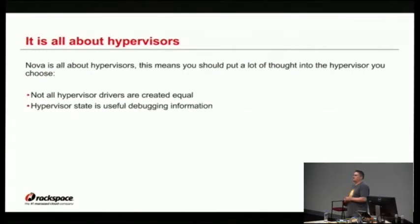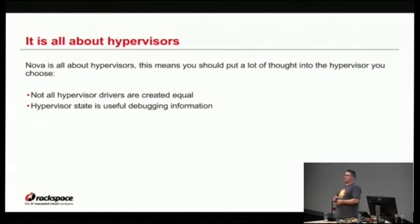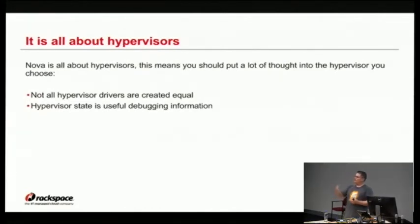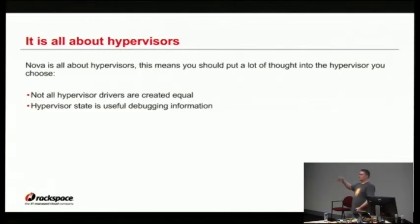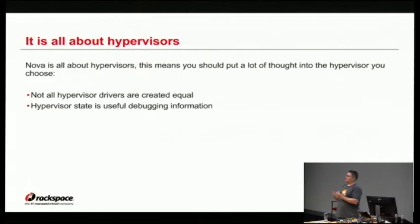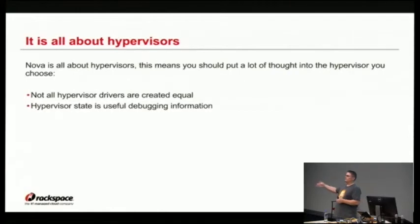Another thing: hypervisor state is a useful debugging tool that's often overlooked. To pick on libvirt for a second — if you're experiencing a problem with an instance, don't just look at what Nova's doing; have a look at what libvirt is doing as well. There's an XML config file that describes the instance you hand to libvirt when you boot it, and those exist on disk. There are also files in the configured instance directory with interesting state, like the console log for the instance. Don't pretend Nova operates in isolation — there are similar tools for Xen, Hyper-V, VMware, and others.